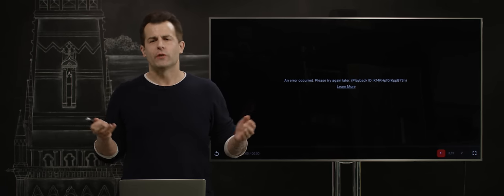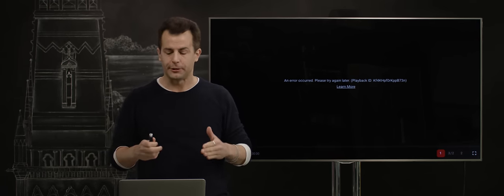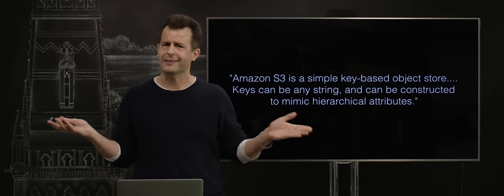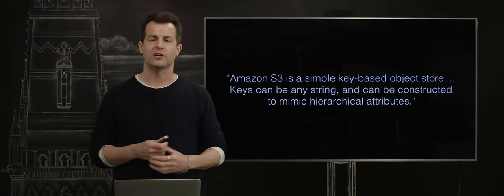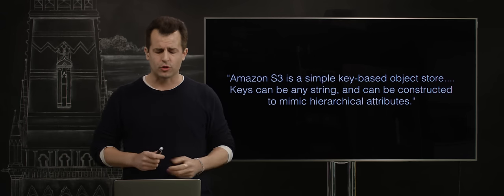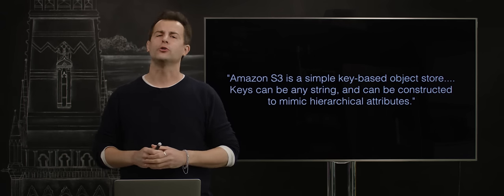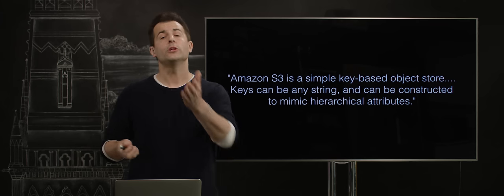Now, what is Amazon S3, and what technically went wrong here? Well, at first glance, it's all pretty technical sounding. Amazon S3 is a simple key-based object store, according to Amazon's documentation. Keys can be any string and can be constructed to mimic hierarchical attributes. But what does that mean? Well, let's tease this apart.